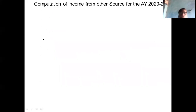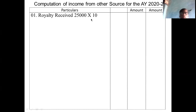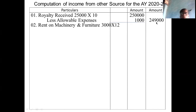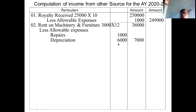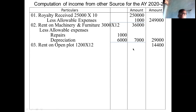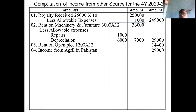You see the solution. First point: royalty received — 25,000 into 10 = 2,50,000, less allowable expense 1,000, balance 2,49,000. Next: machinery and furniture rent 3,000 into 12 = 36,000, less allowable expenses — repairs 1,000, depreciation 6,000, total 7,000 — balance 29,000. Third point: rent on open plot 14,400. Fourth point: income from agriculture in Pakistan — 29,000 rupees.